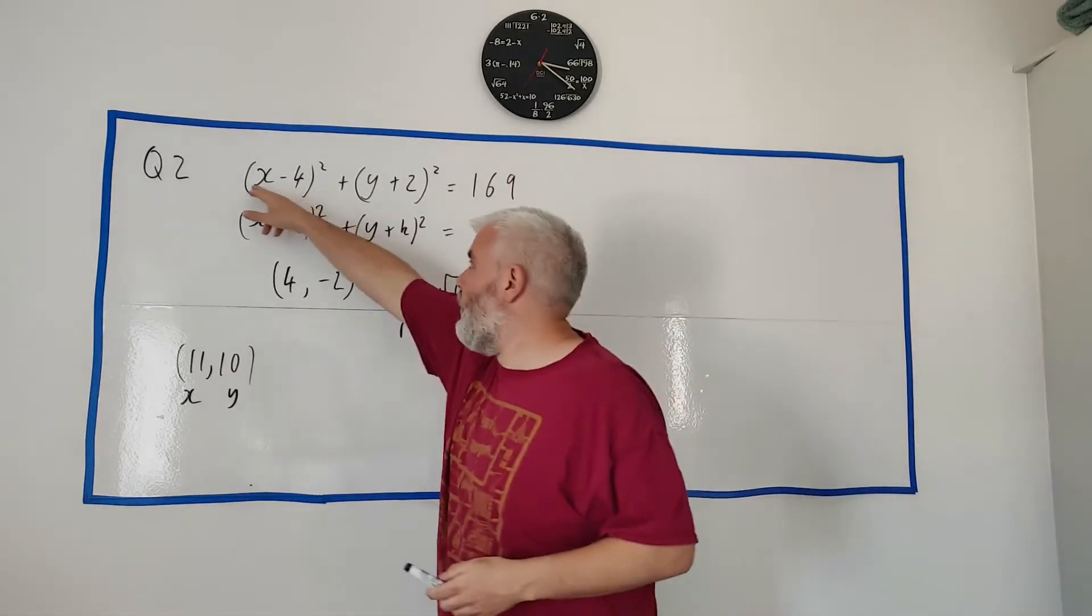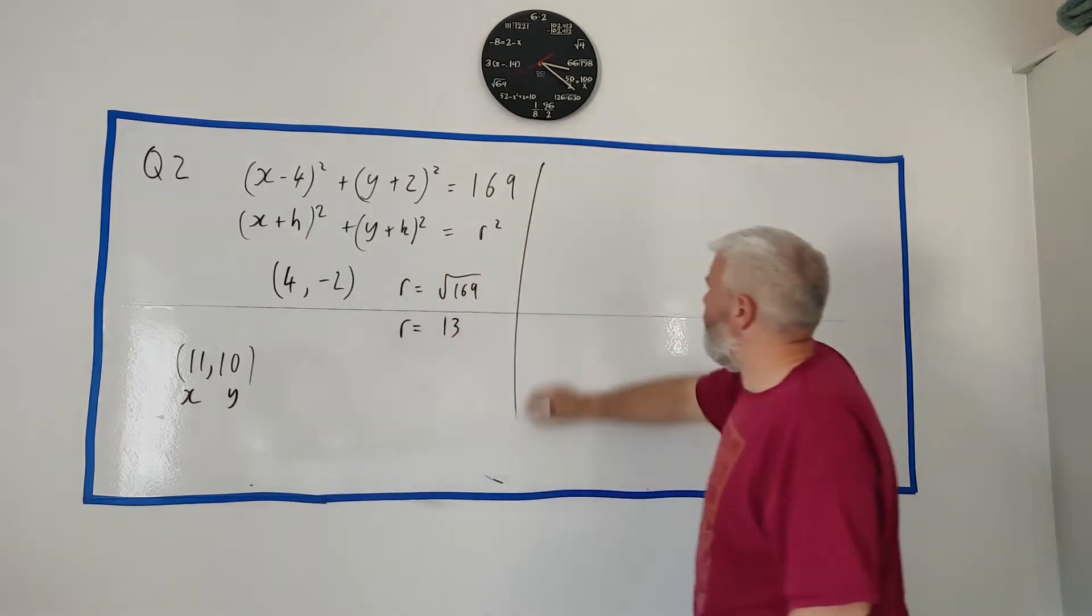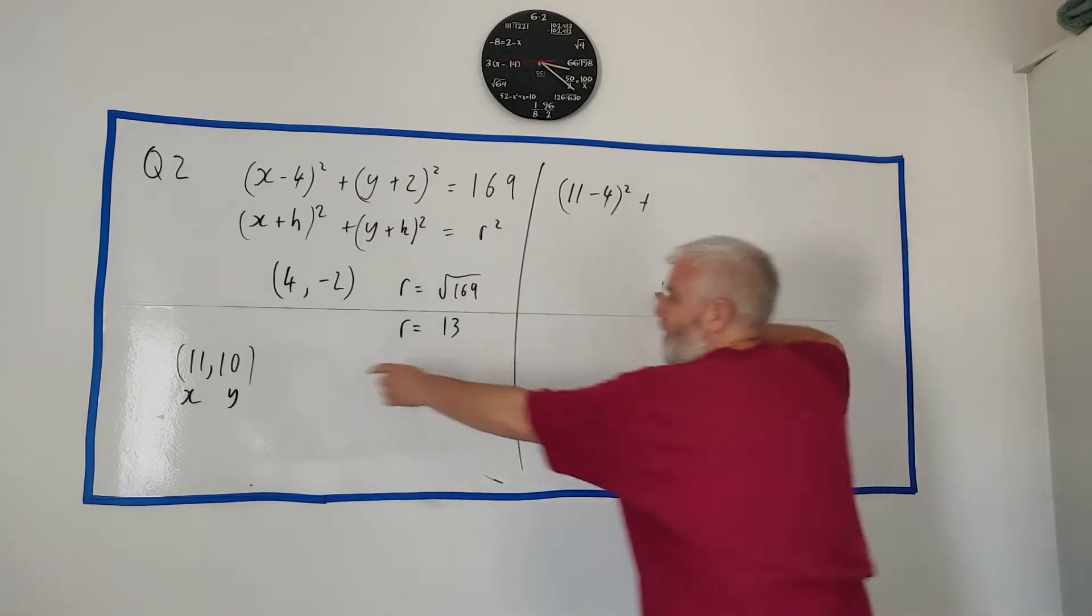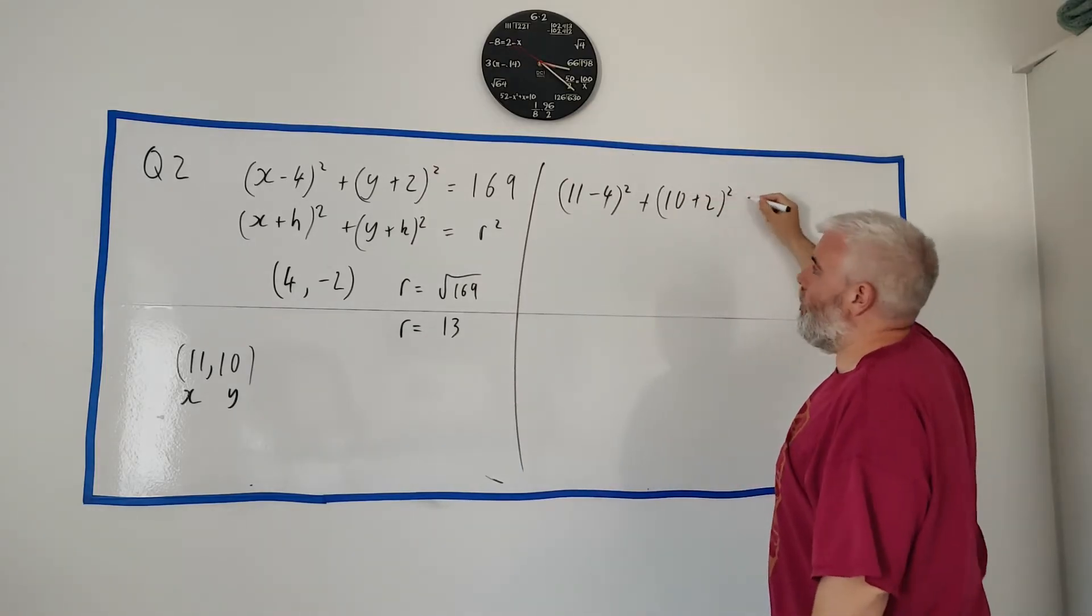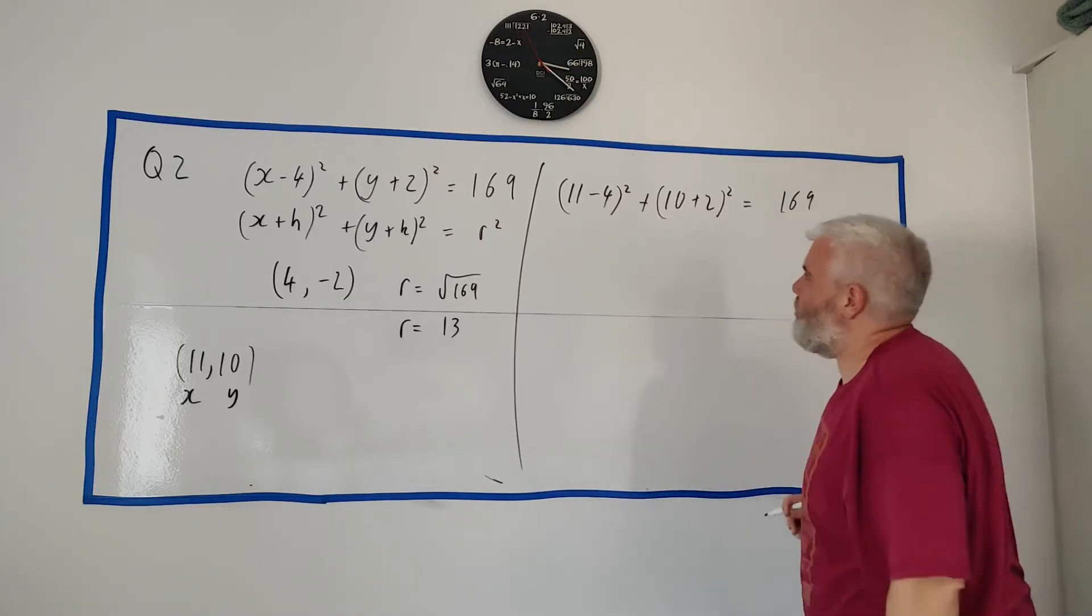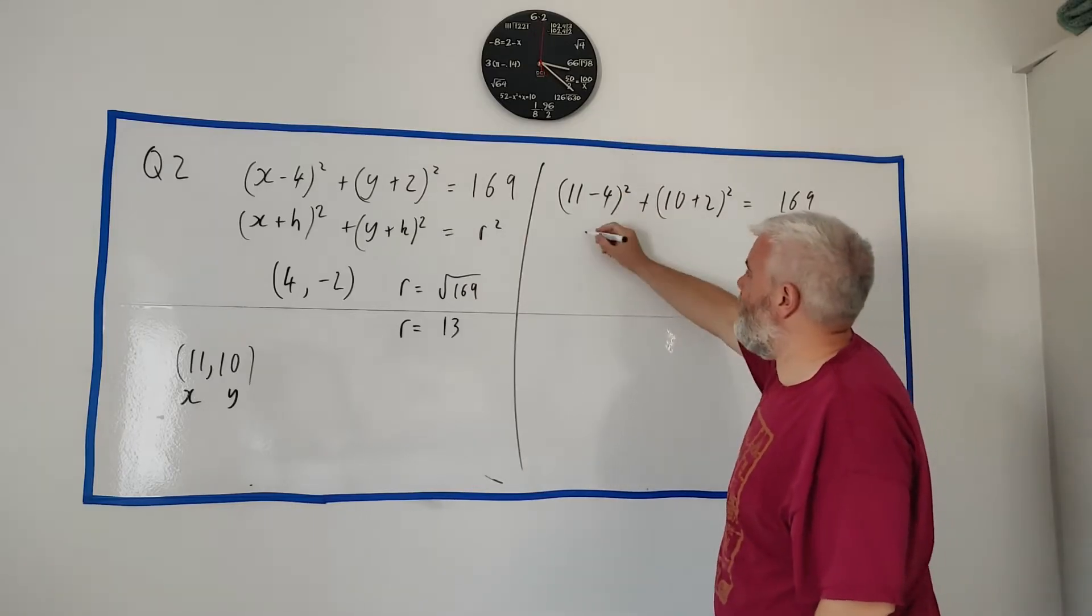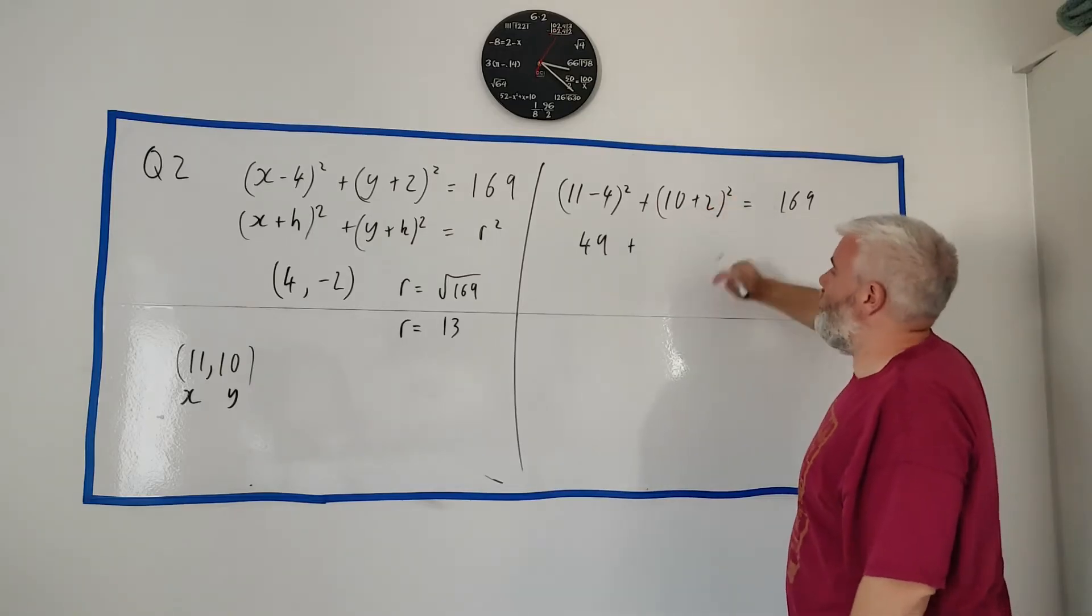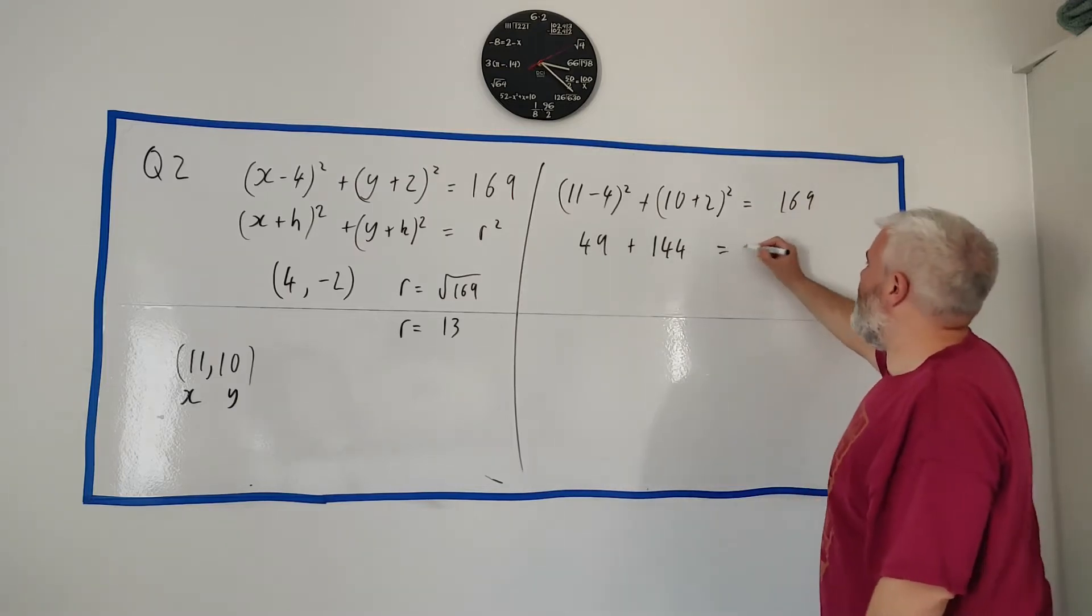So let's just go ahead and do that. Let's write this line again, but instead of x, let's put in 11. (11 - 4)², instead of y, we're putting in 10. (10 + 2)² = 169. We don't know this. You can leave this out, but I'll just put it in every time. 11 - 4 is 7. 7² is 49. 10 + 2 is 12. 12² is 144.